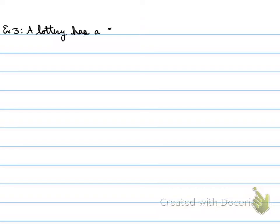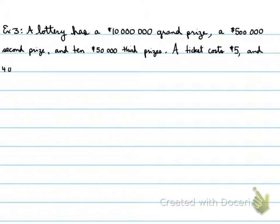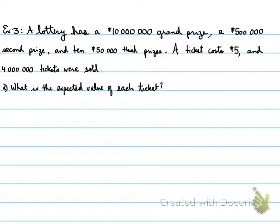Example 3. A lottery has a $10 million grand prize, a $500,000 second prize, and ten $50,000 third prizes. A ticket costs $5, and 4 million tickets were sold. What is the expected value of each ticket?